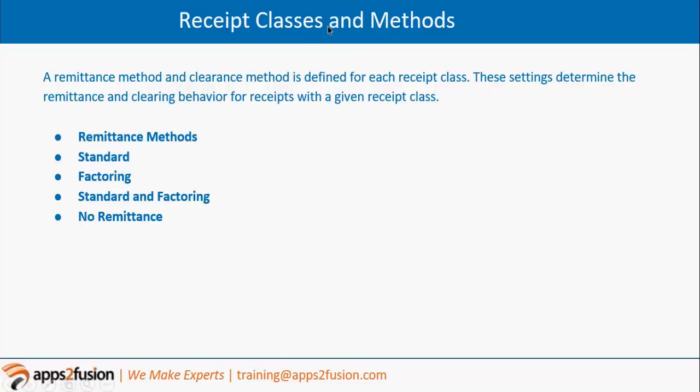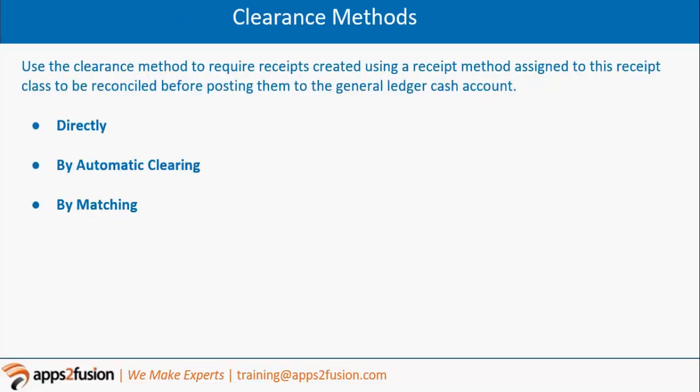All three setups - receipt class, receipt method, and remittance bank account - are on the same single page. Remittance bank account is the bank account to which the customer is making the transfer, to which account the customer is paying the money, to which account they are remitting the money.